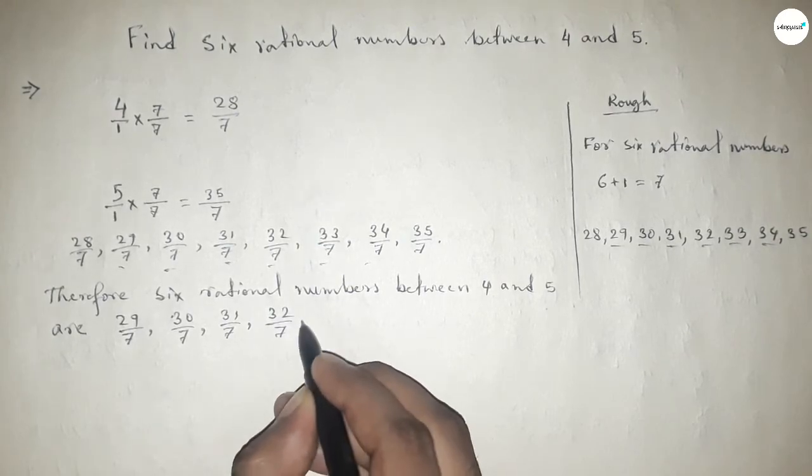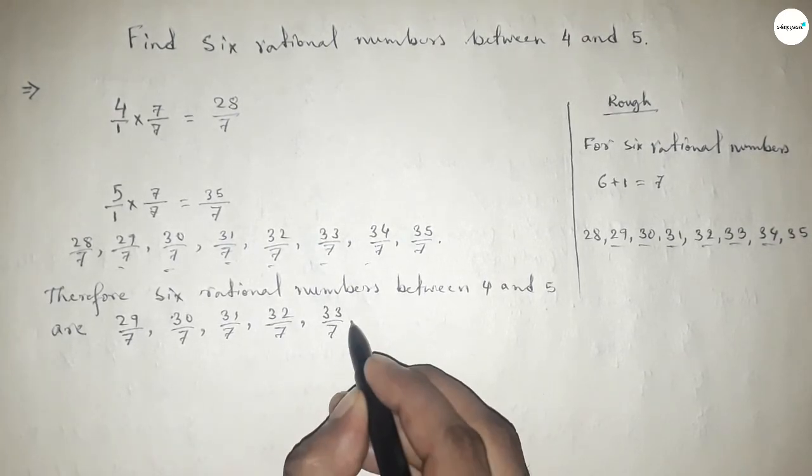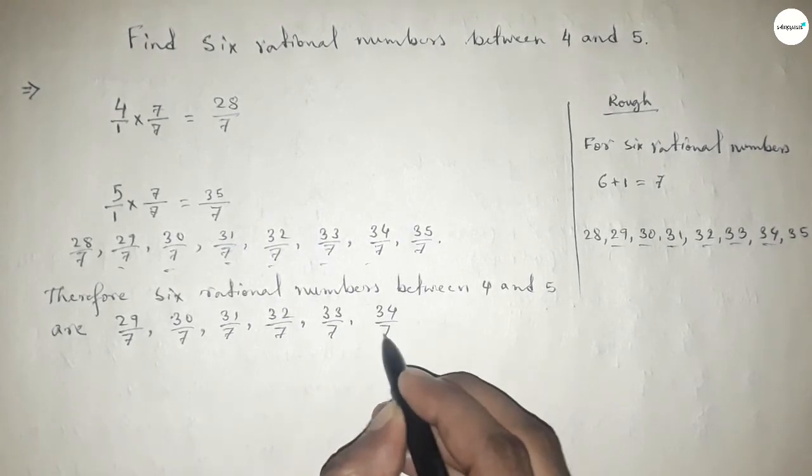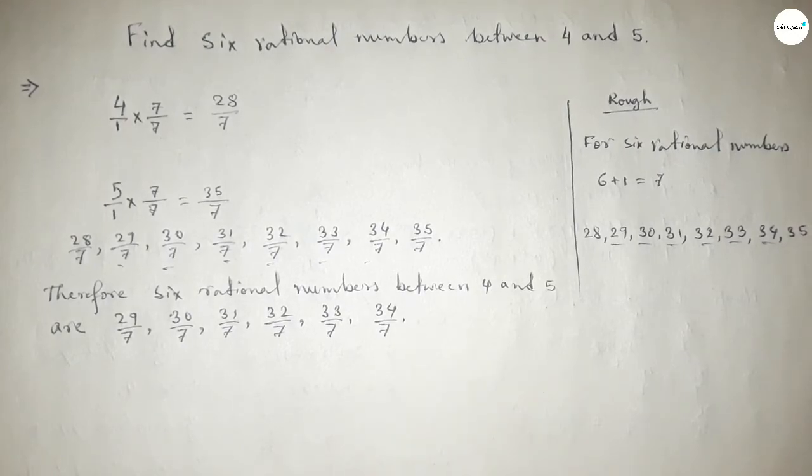So this is the process to find out six rational numbers between 4 and 5. That's all, thanks for watching. If this video is helpful to you then please subscribe, like, and comment on my video.